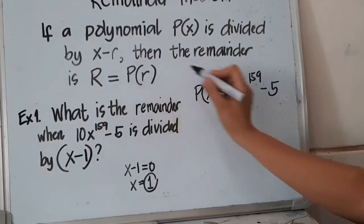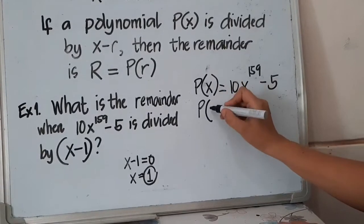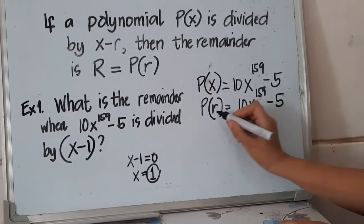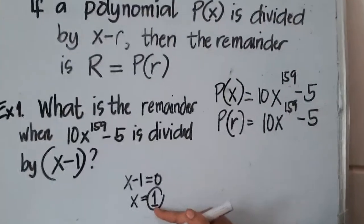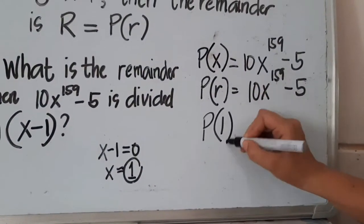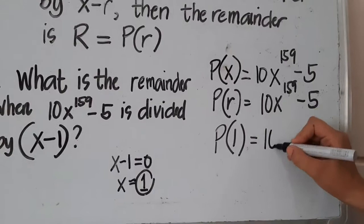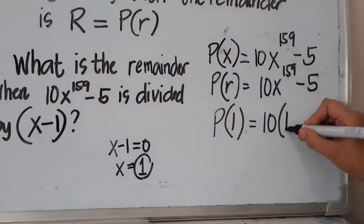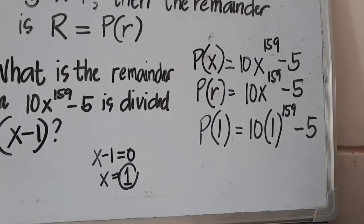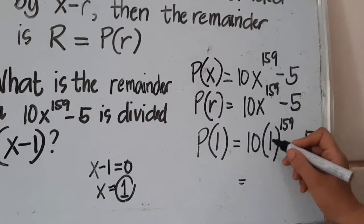So therefore, our P(x) will no longer become P(x), but it will become P(r). So this will become P(r) is equals to 10x raised to 159 minus 5. And our r, since we already solved for our r, which is 1, so r here will become P(1). So P(1), we just substitute our x by 1. So this will become 10 times. Our x will become 1 raised to the power of 159 minus 5. That's it. Next, we simplify.